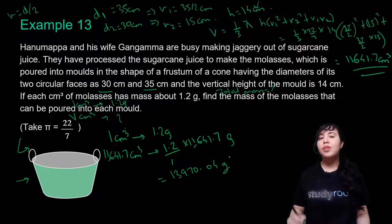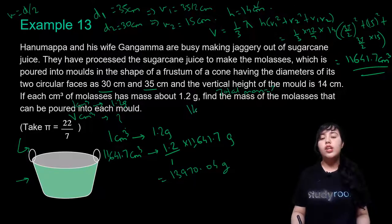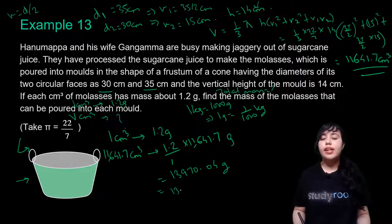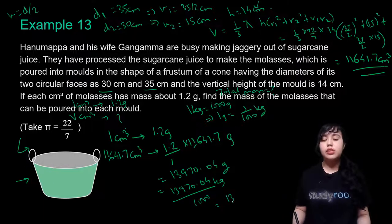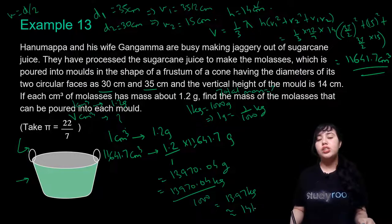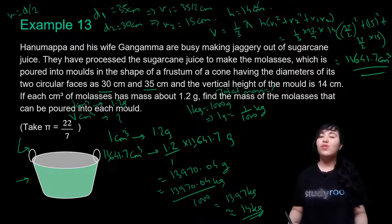Converting to kilograms: 1 kg = 1000 g, so divide by 1000: 13,970.04 ÷ 1000 ≈ 13.97 kg ≈ 14 kg. So the mass of molasses that can be poured into each mold is approximately 14 kilograms.